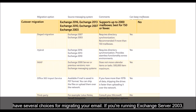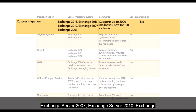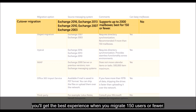If you're running Exchange Server 2003, 2007, 2010, 2013, or 2016, and you have fewer than 150 mailboxes, choose a cutover migration. Though cutover migration supports moving up to 2000 mailboxes, you'll get the best experience when you migrate 150 users or fewer.